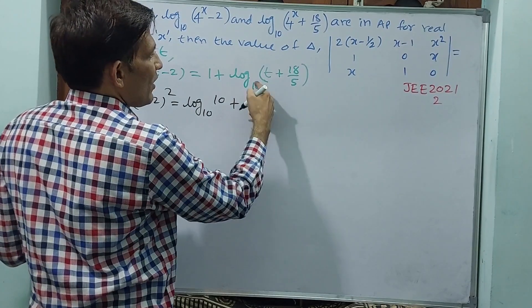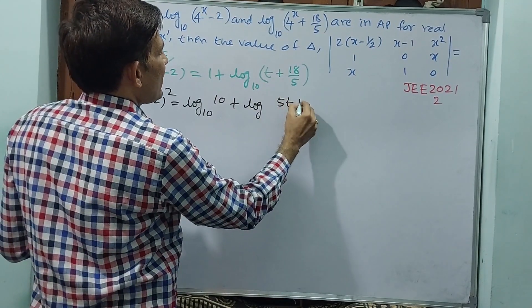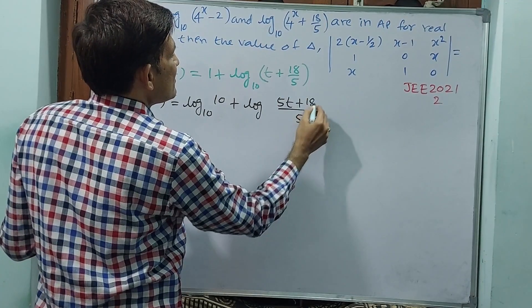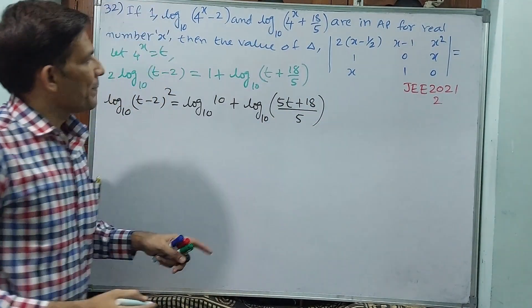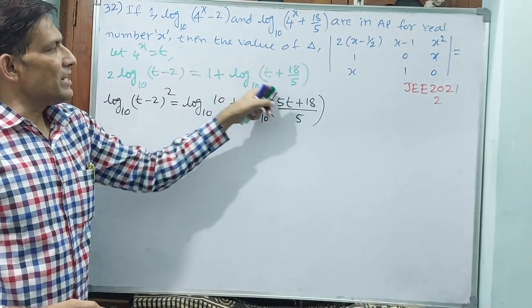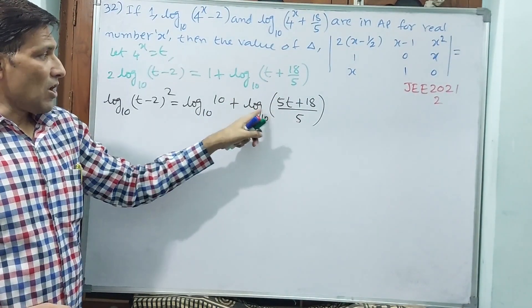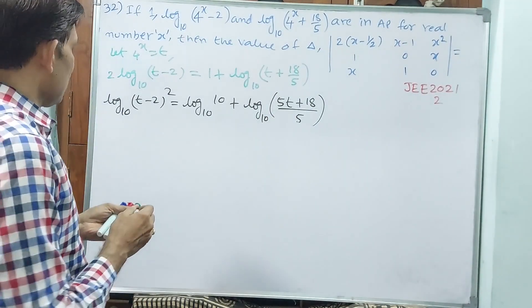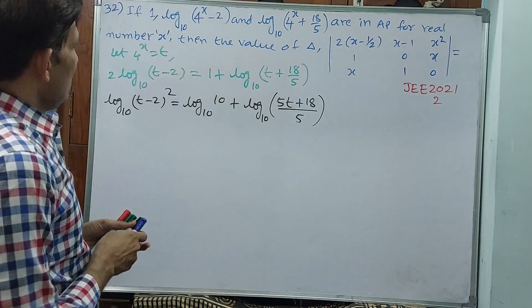Plus log of, see, (5t + 18)/5 to the base 10. 5t + 18 by 5. This log 5 to the base 10, again, again subtraction. Again subtraction you can do afterwards.